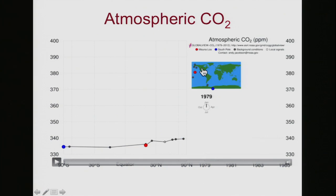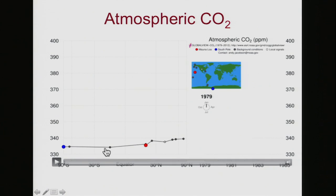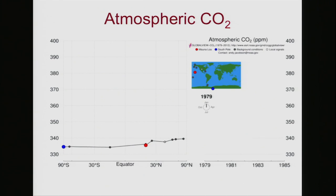These sites are going to be shown on the graph — there's one at the South Pole, one in Hawaii, and some in northern Alaska — going from the southern hemisphere through the tropics to the northern hemisphere. On the left-hand side we're going to see how CO2 varies from month to month, from 1979 up to the present.